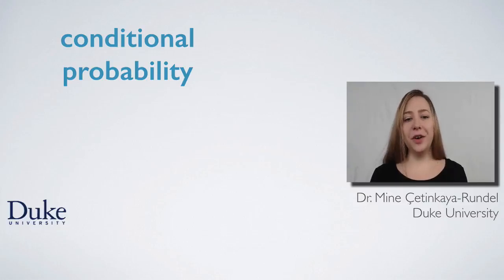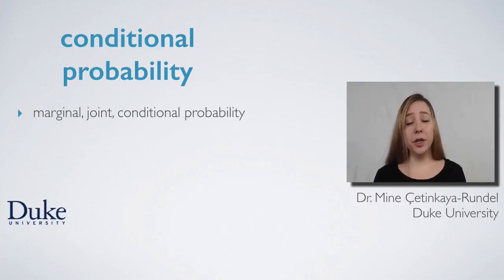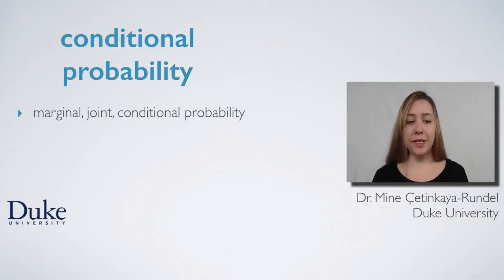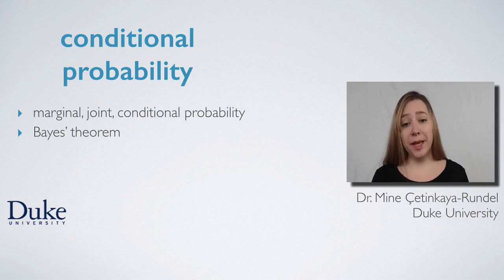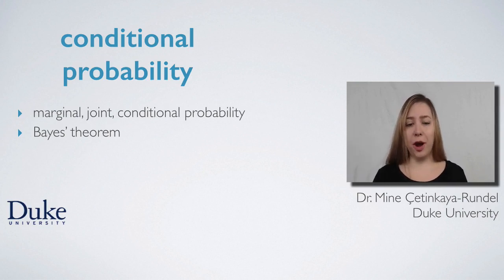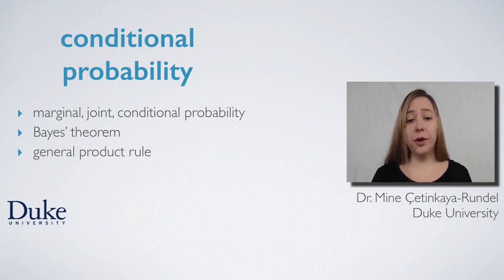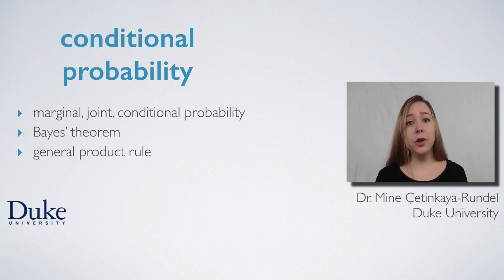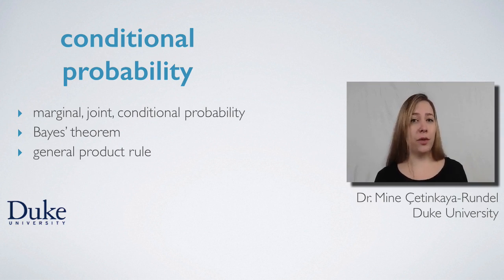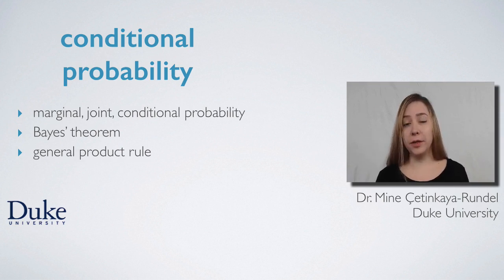In this video we will define marginal, joint, and conditional probabilities, introduce Bayes' theorem for calculating conditional probabilities, and generalize the product rule for calculating joint probabilities regardless of whether the events are dependent or independent.